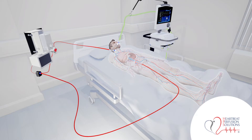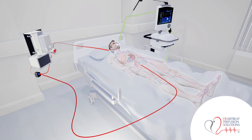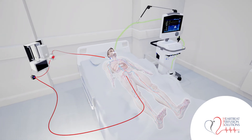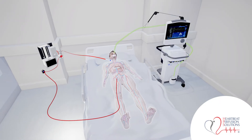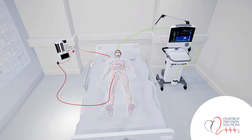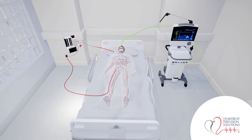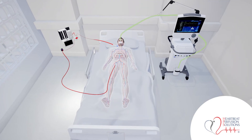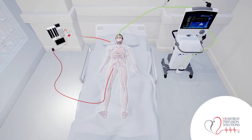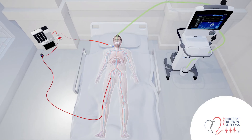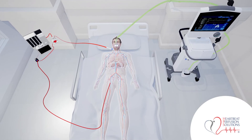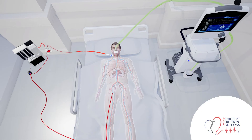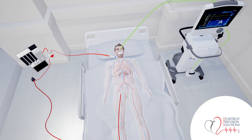Ventilator settings for the native lungs and heart, VA ECMO: in cases where ECMO supports both the lungs and the heart, the ventilator settings will be adjusted to support both respiratory and cardiac function. The settings will depend on the patient's specific needs, and adjustments may be made to optimize oxygen delivery and carbon dioxide removal.